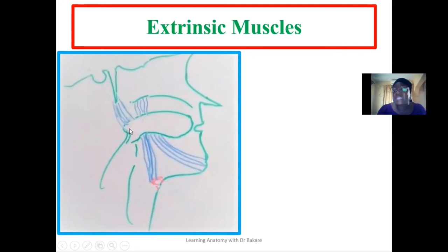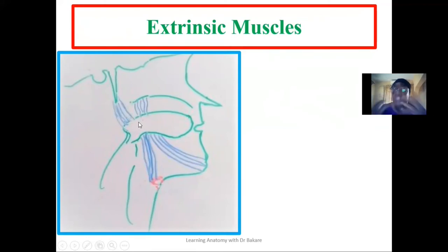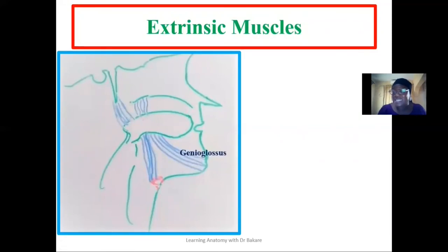This is the apex of the tongue, this is the body, and this is the root. The apex and body of the tongue are highly mobile, while the root is held in place by the extrinsic muscles. This helps to prevent the tongue from falling out of the oral cavity. We have the genioglossus, which connects the tongue with the mandible.